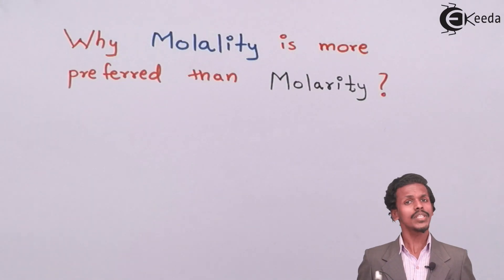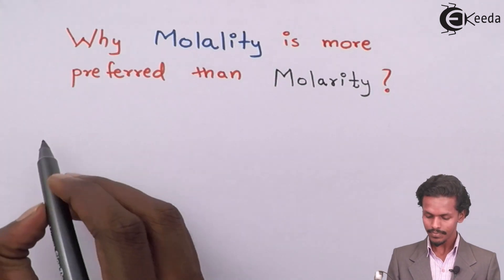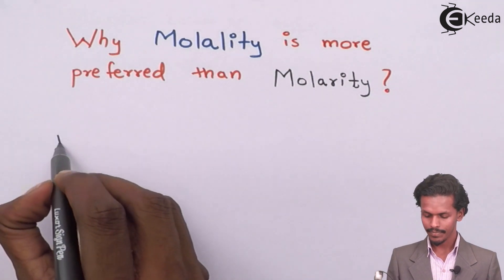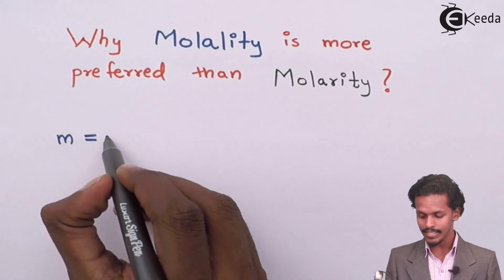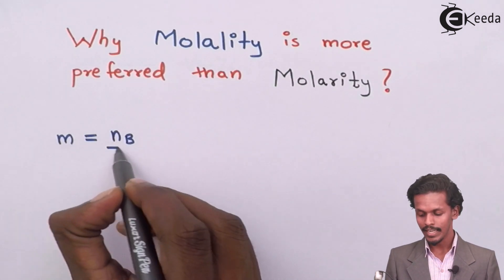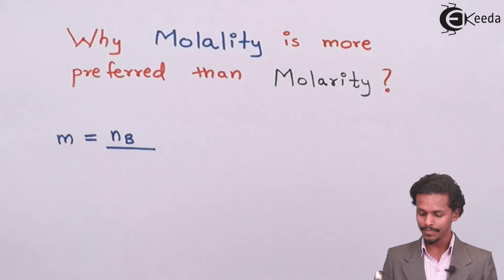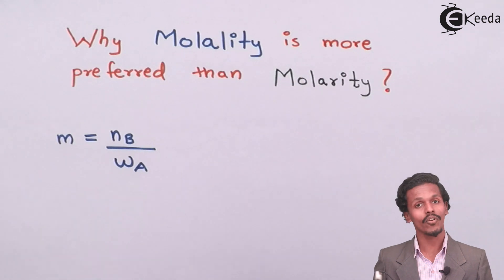As we know the formula of molality, it is m equals n_B divided by W_A, where it is the number of moles of solute, that is n_B, dissolved in weight of solvent in kg, where W_A stands for weight of solvent.